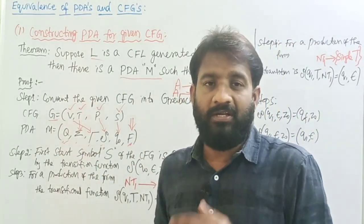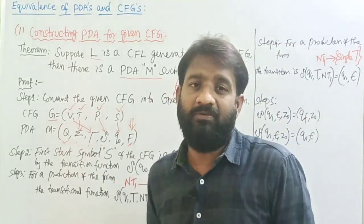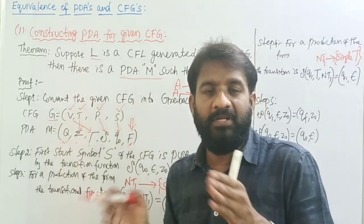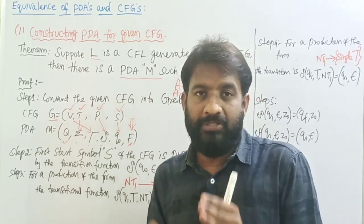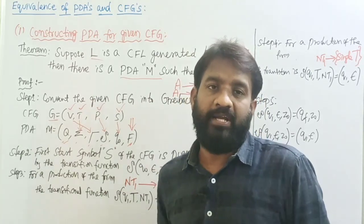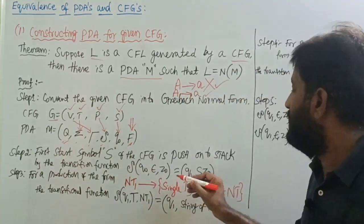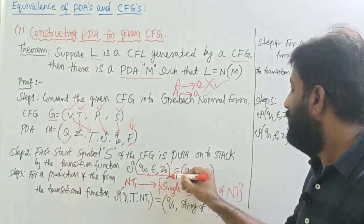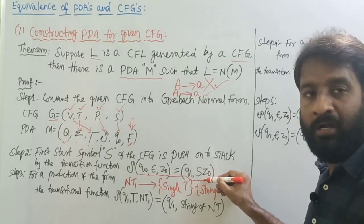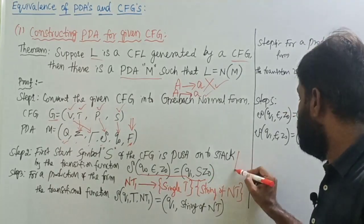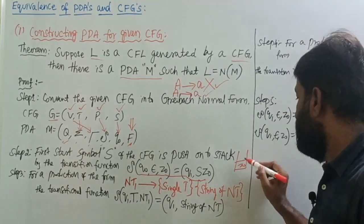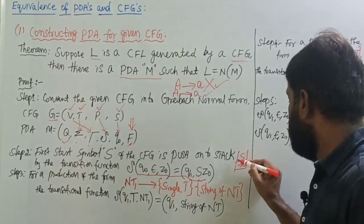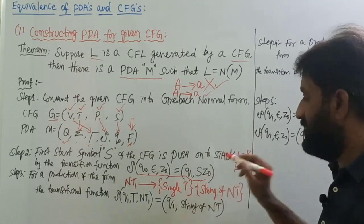Step one is to convert the context-free grammar into Greibach Normal Form. Step two: take the start symbol in the grammar and push it onto the top of the stack by writing the transition: delta(q0, epsilon, Z-naught) = (q1, S Z-naught). Initially the stack contains only Z-naught, and now we are pushing S onto the top of the stack, so the stack content becomes S Z-naught.